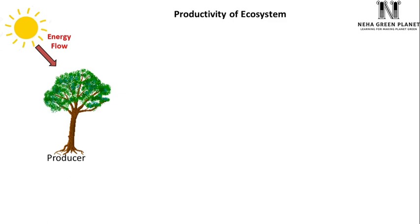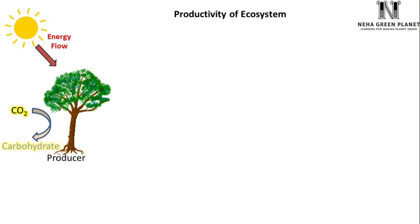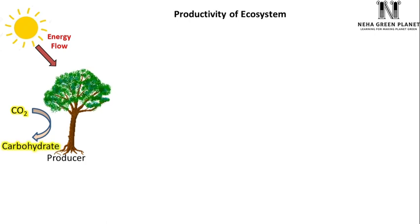During photosynthesis, these producers capture carbon dioxide from the atmosphere and convert it into carbohydrates. Carbohydrates are the stored organic matter in the body of plants.